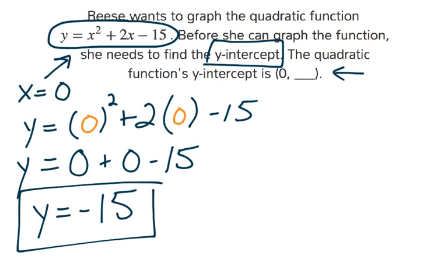So this is your y-intercept, and your y-intercept point, when plugged back in, is 0, comma, negative 15.